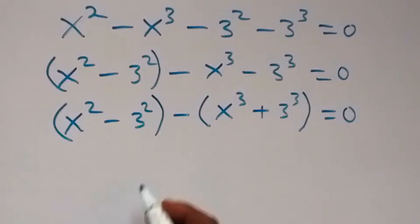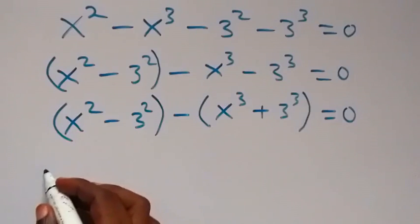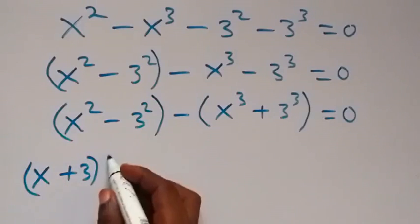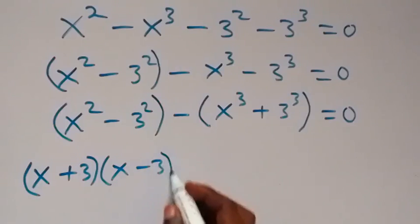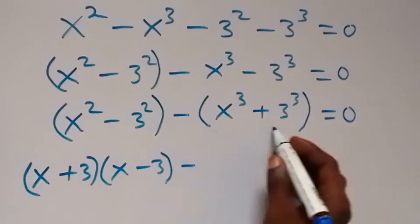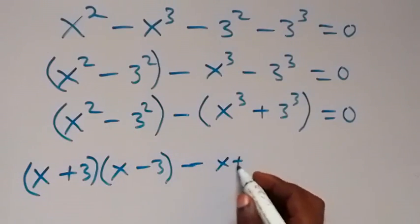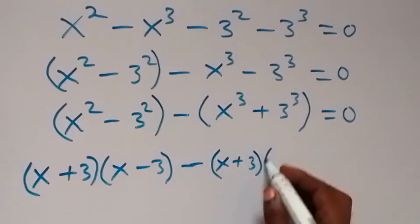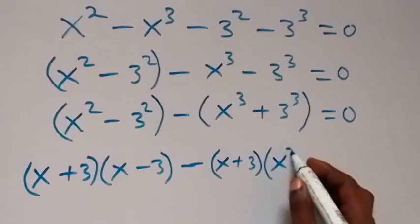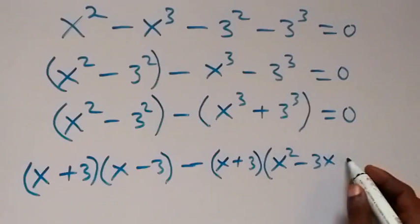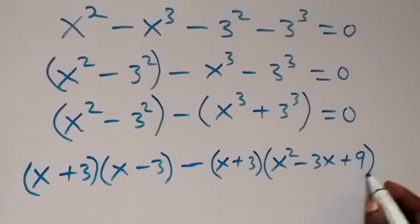From here we can apply the difference of two squares: that is written as (x + 3)(x − 3). Then minus here we apply the sum of two cubes formula, which gives us (x + 3)(x squared minus 3x plus 9) equals 0.